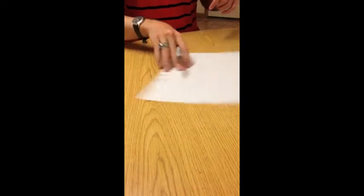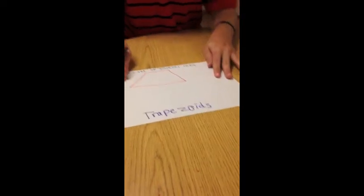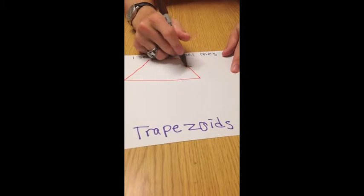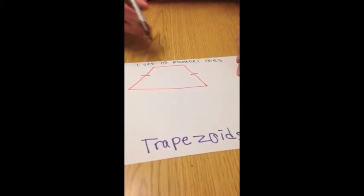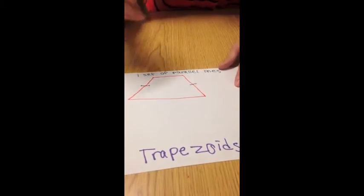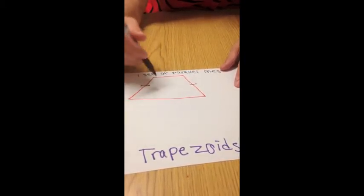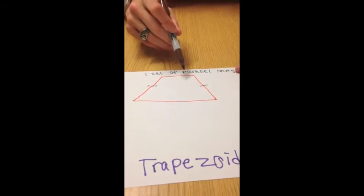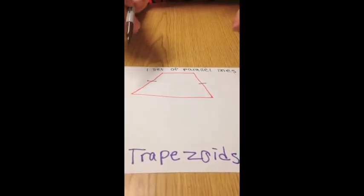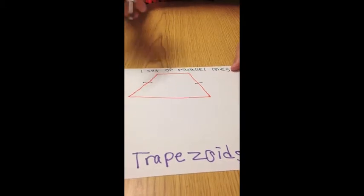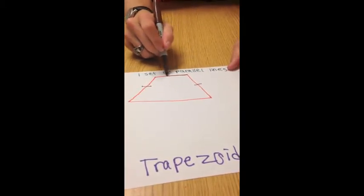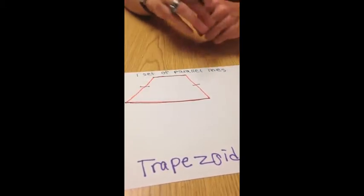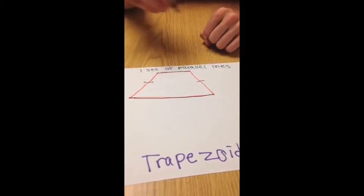The last quadrilateral that I am going to demonstrate on this video today is the trapezoid. The trapezoid will have equal marks here and here, but it also has one set of parallel lines. Now, don't let this trick you, because parallel lines can be parallel to each other, but they do not need to be the same length to be parallel. So, here's one parallel line. Here's the other parallel line. So, even though they are different lengths, they are still parallel to one another.